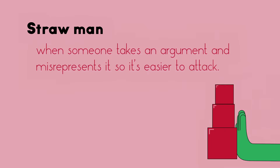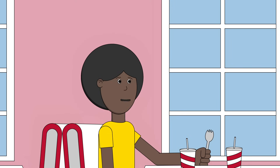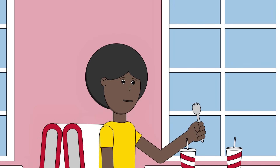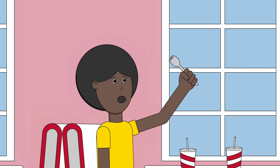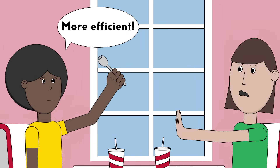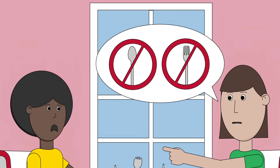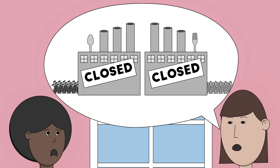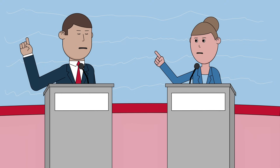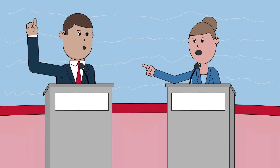A straw man is when someone takes an argument and misrepresents it so that it's easier to attack. For example, let's say Callie is advocating that sporks should be the new standard for silverware, since they're more efficient. Madeline responds that she's shocked Callie would want to outlaw spoons and forks and put millions out of work at the fork and spoon factories. A straw man is frequently used in politics, in an effort to discredit another politician's views on a particular issue.